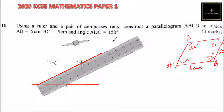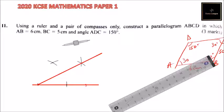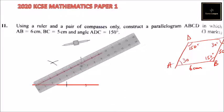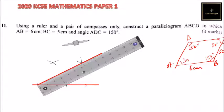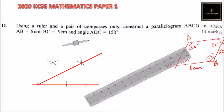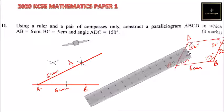That angle is now 30 degrees. We can repeat the same process here — since we are told BC is 5 cm, you can measure 5 cm along that line. So this is A, B, and this is where we have D. This is 6 cm and this is 5 cm, because opposite sides are equal for a parallelogram.